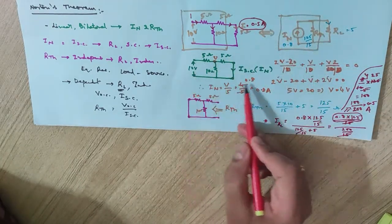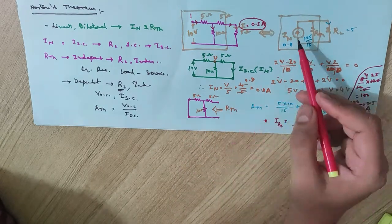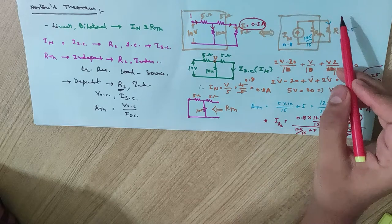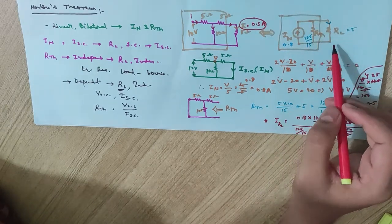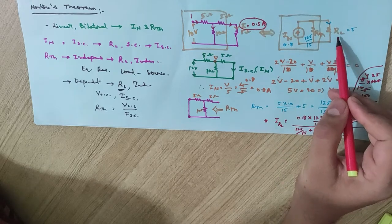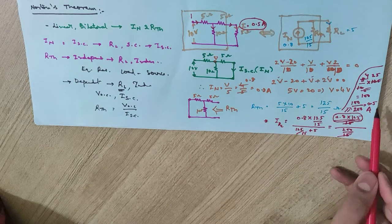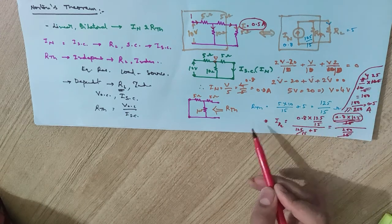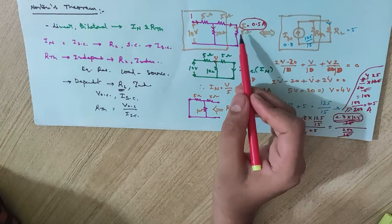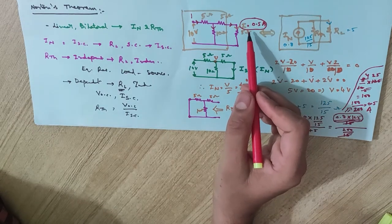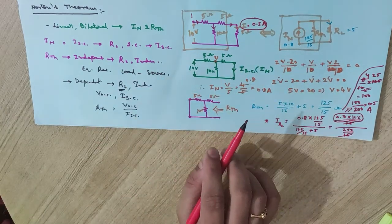In summary, to apply Norton's theorem: first find IN, then find RTH, and finally substitute them — IN in parallel with RTH and the load resistor — and use the current division principle to find the current through the load resistor. The answer is 0.5A, confirming the result by both the direct method and Norton's theorem.